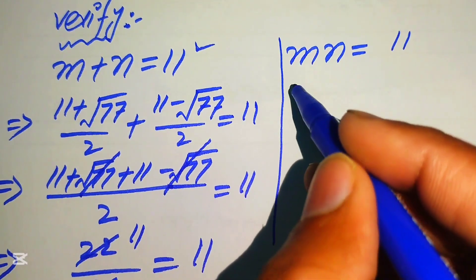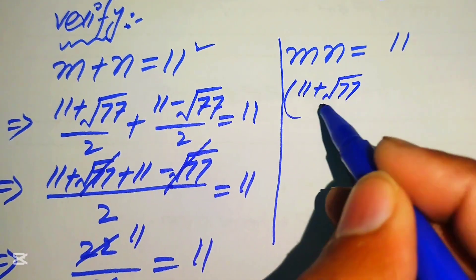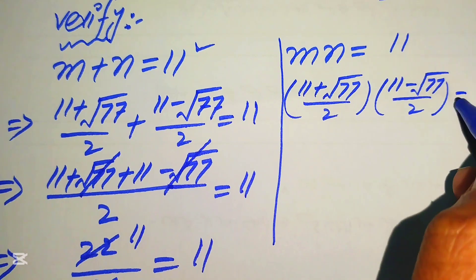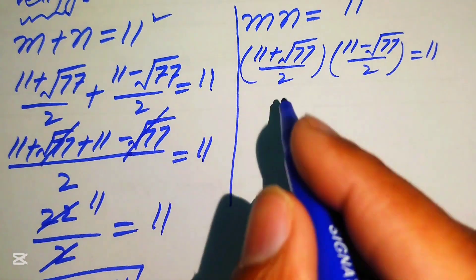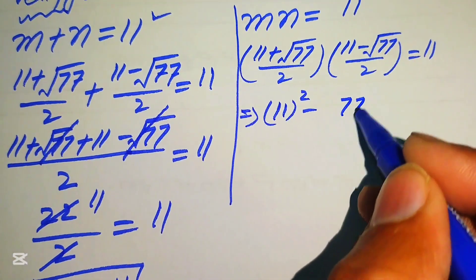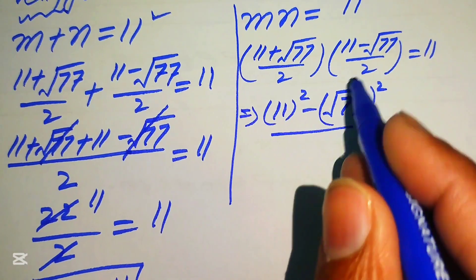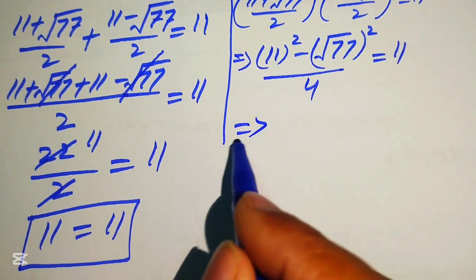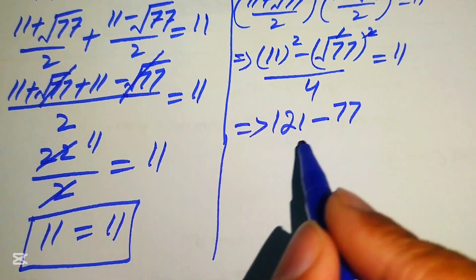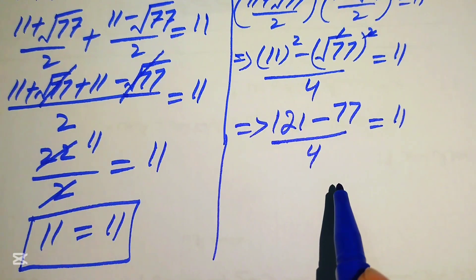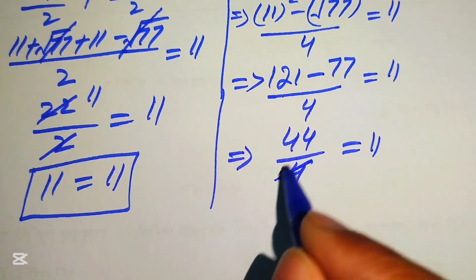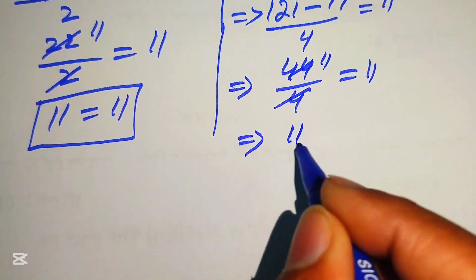For the second equation, we put m equals (11 plus square root of 77) divided by 2 and n equals (11 minus square root of 77) divided by 2, equaling 11. Applying the (a+b)(a-b) formula gives (11 squared minus (square root of 77) squared) divided by 4 equals 11. So (121 minus 77) divided by 4 equals 44 divided by 4 equals 11. These cancel and 11 equals 11.